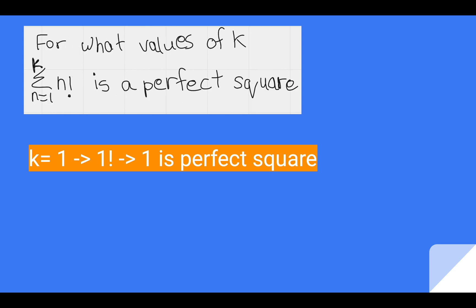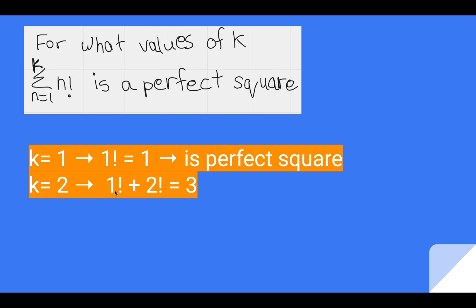So only remains the choice is k 1 to 3. For k equals 1, it is just 1 factorial, so it is a perfect square. For k equals 2, it is 1 factorial plus 2 factorial. This 3 is not a perfect square.